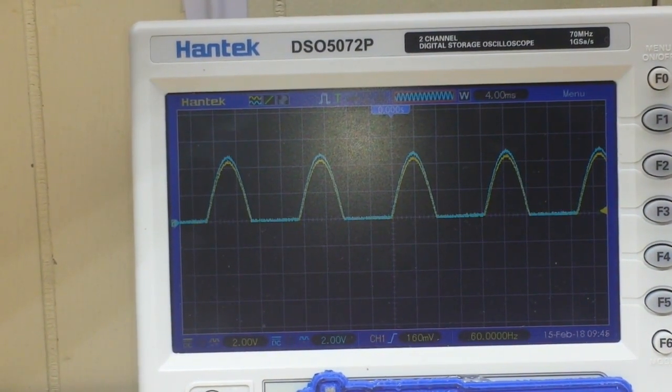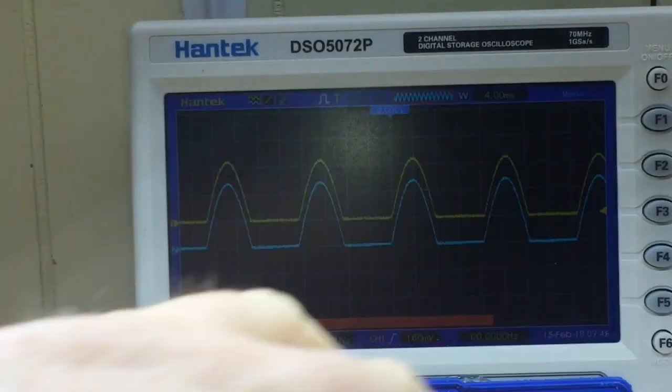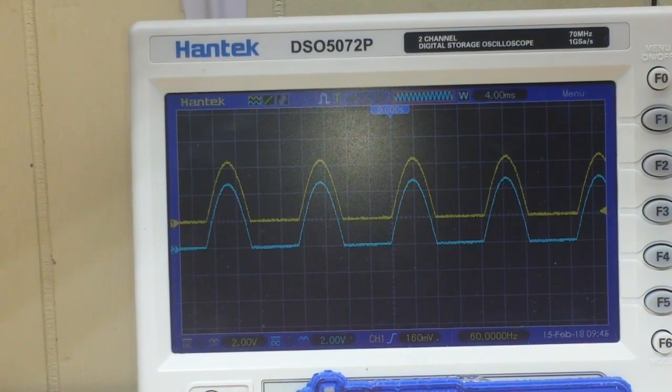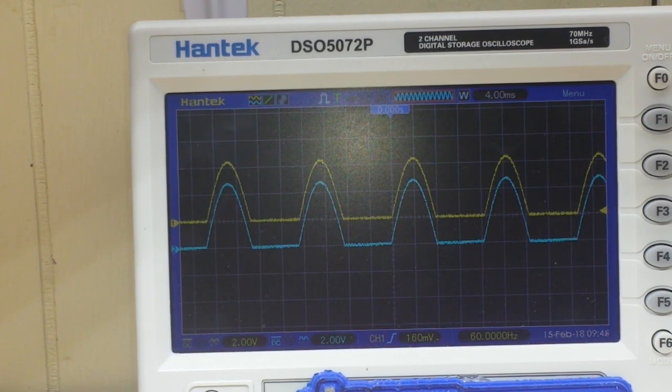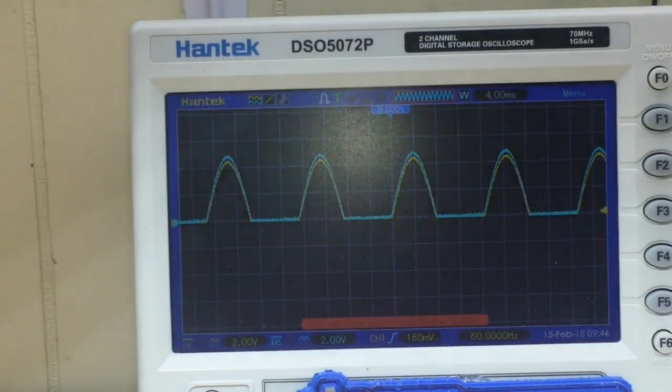Now if we look carefully at the scope, let me move these a little bit. Okay, the yellow trace is the silicon diode, and the blue trace is the Schottky diode. And at 60 hertz, they are both perfectly fine.